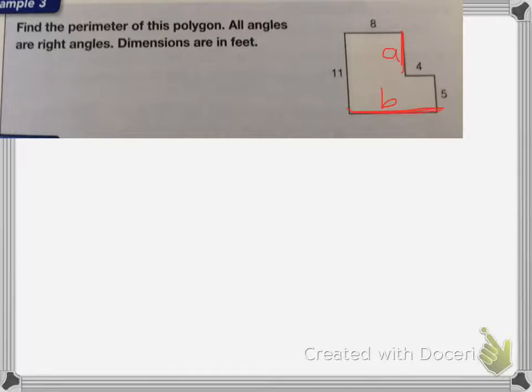And to do that, I'm going to think, well, for side B, 8 plus 4 equals the same length as side B. Because if you add these two sides together, it's going to be the same as side B. So 8 plus 4 is equal to 12. So I know that B is equal to 12 feet.